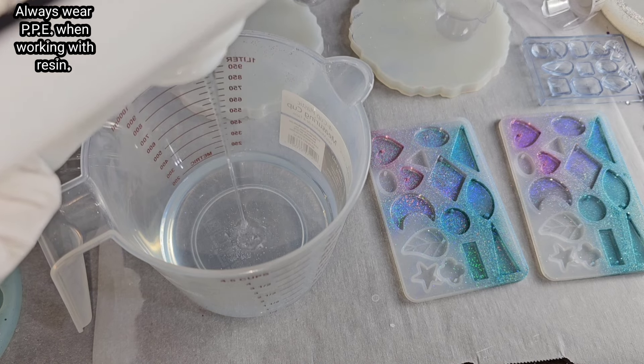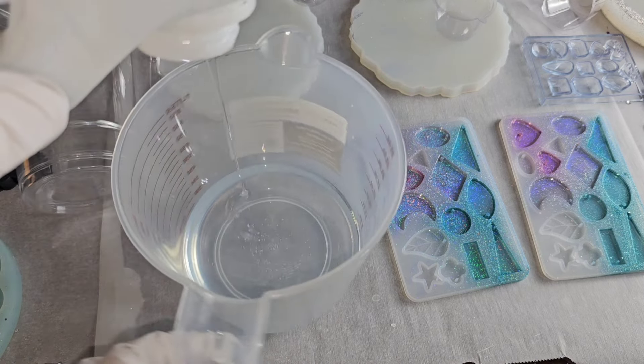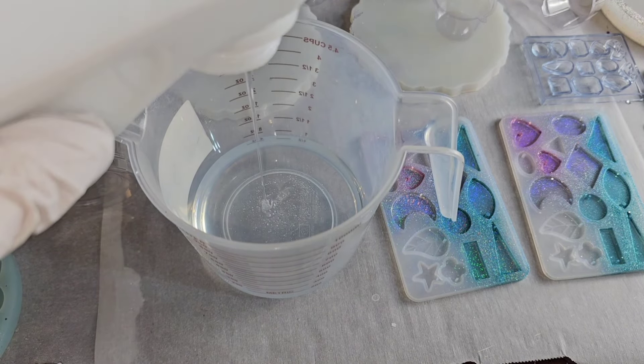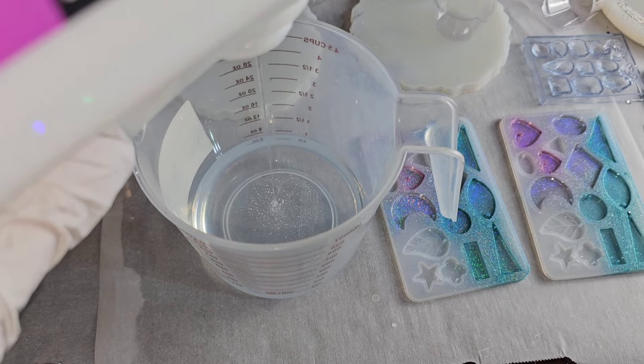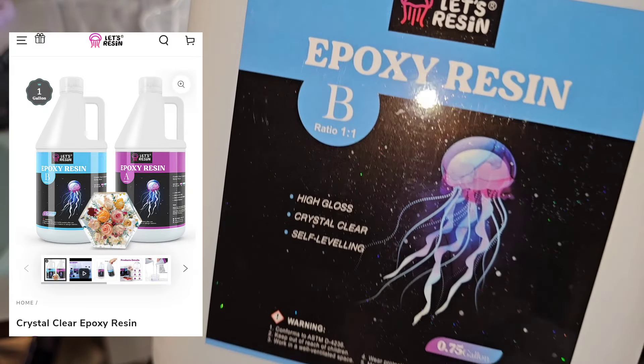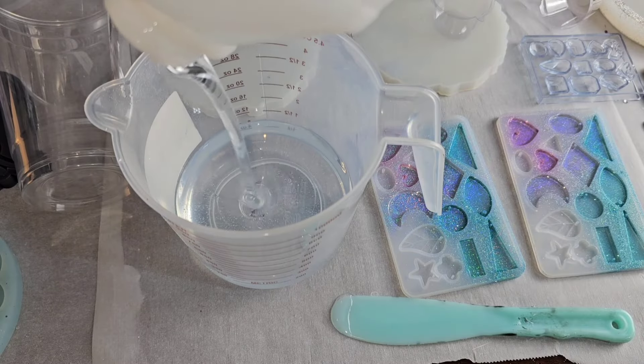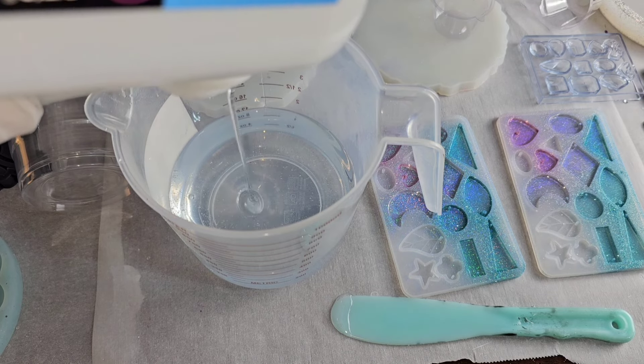I'm using the Let's Resin Epoxy. It's a one to one ratio, so it's one part A to one part B. Your kit is going to come with a jug of A and a jug of B. This is A that I'm pouring in first. And I went in with eight ounces part A and now I'm going to go in with eight ounces part B. I was mixing up 16 ounces total. So eight ounces part A, eight ounces part B equals 16 ounces.